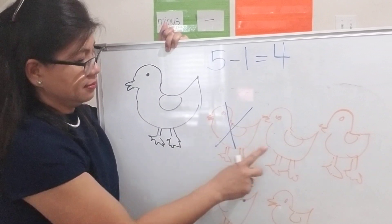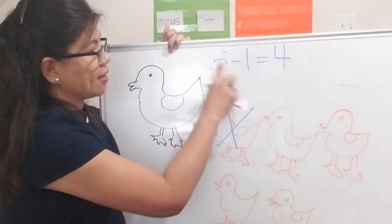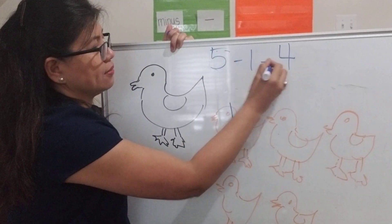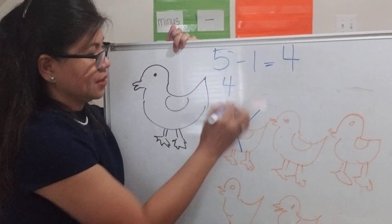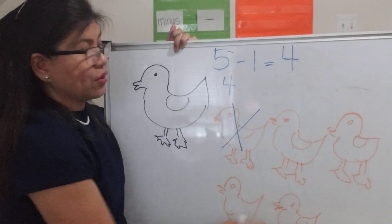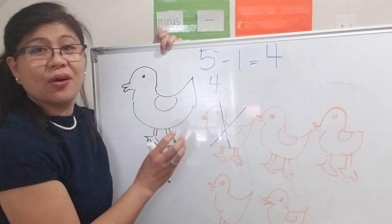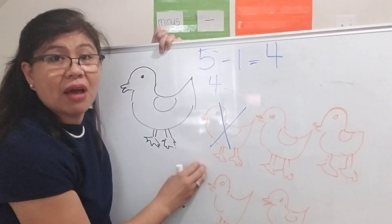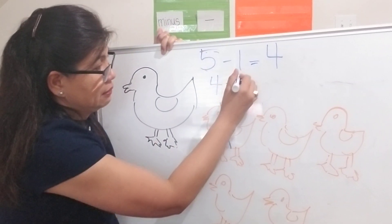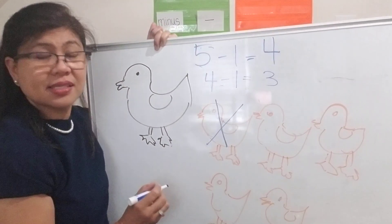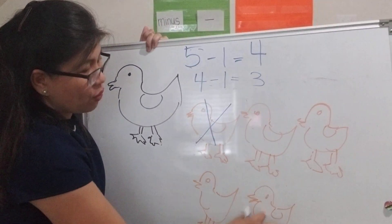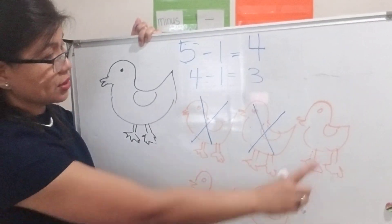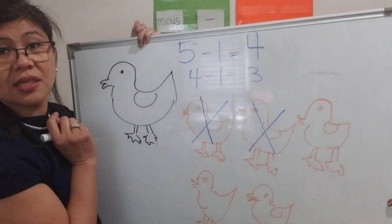Now how many ducklings? We have four. Four little ducks came out to play over the hills and far away. Mother duck said quack, quack, quack, quack — but only three little ducks came back. One duck went out, so now I have one, two, three — I have three ducks left.